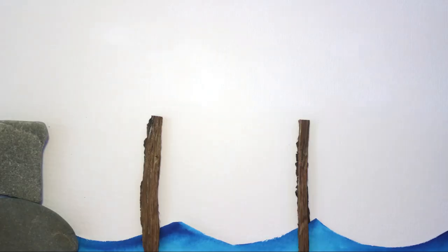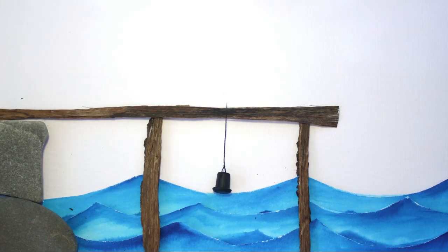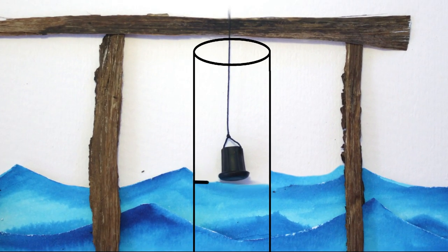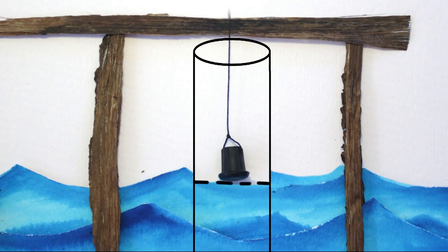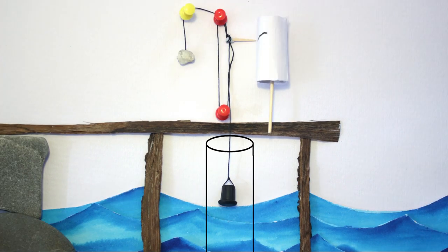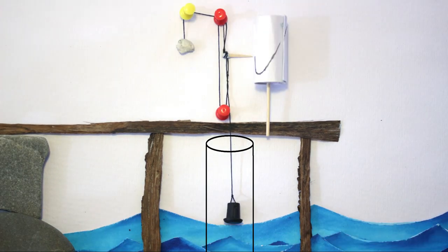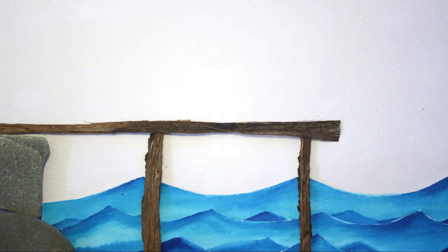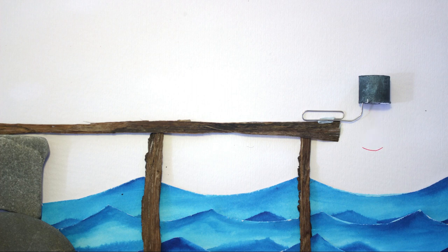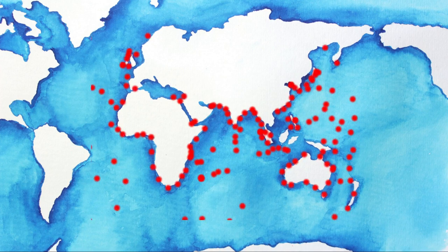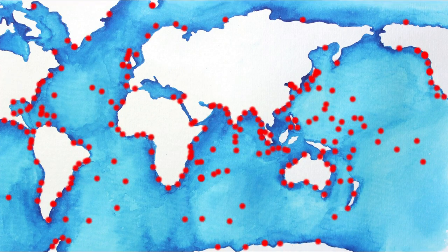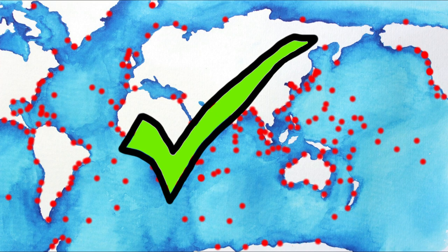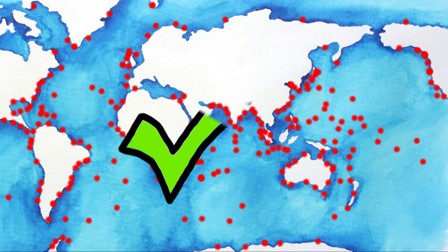Then came early tide gauges, which used a float that would rise and fall with the changing water level. The float was put inside a stilling well to help block out the waves, and at the other end was a pen that would draw the pattern of the tide on a roll of paper. Modern tide gauges do the same job using more advanced technology, usually by measuring the time it takes for a pulse to hit the water and come back. There are currently hundreds of tide gauges all over the world keeping watch over sea level, but they can only be used on coastlines.